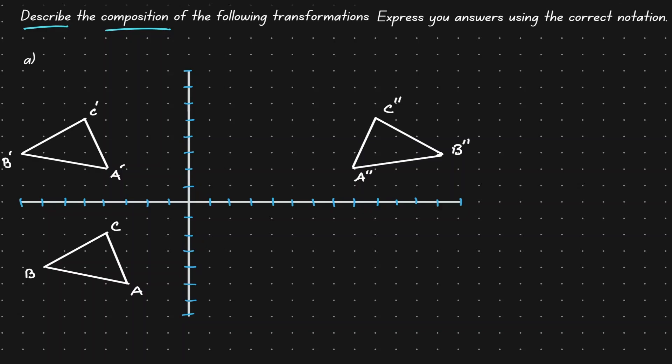And then after that, we want to express that composition using the correct notation. So what's the strategy here? Let's start by identifying the original image.